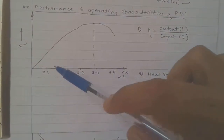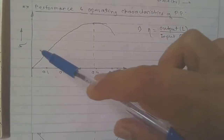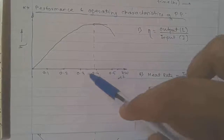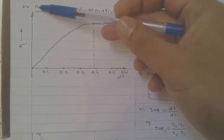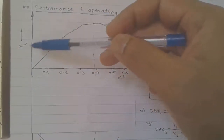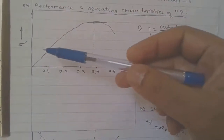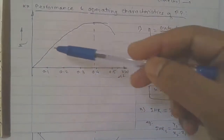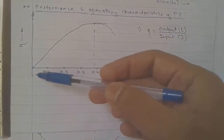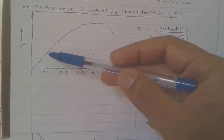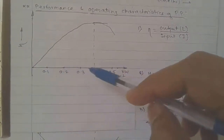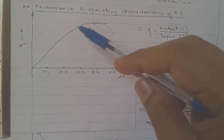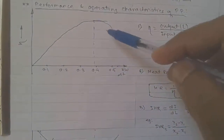Consider the plot of load versus efficiency — load on the x-axis in kilowatts and efficiency on the y-axis. When the efficiency versus load graph is plotted, we see that as the load increases, efficiency first increases in a straight-line manner, reaches a maximum point, and then goes on decreasing.